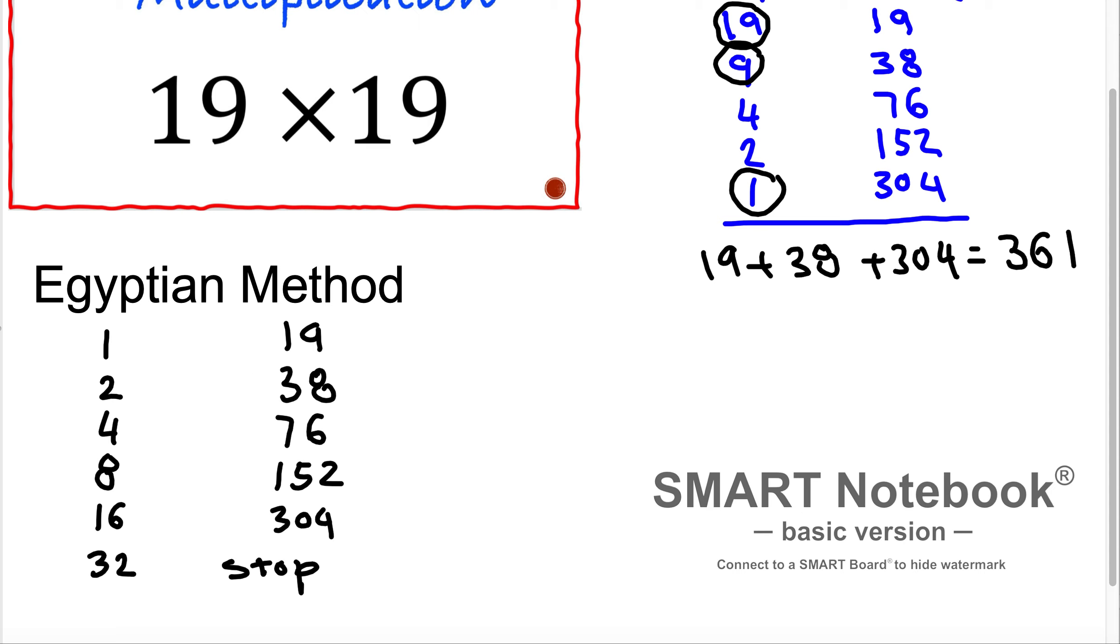And what we can do here? First of all we are looking here to make the left side equal the number 19. 16 plus 2 is 18, and plus 1 is 19. And now I'm taking these values here: 1, 2 and 16. And I'm adding together.